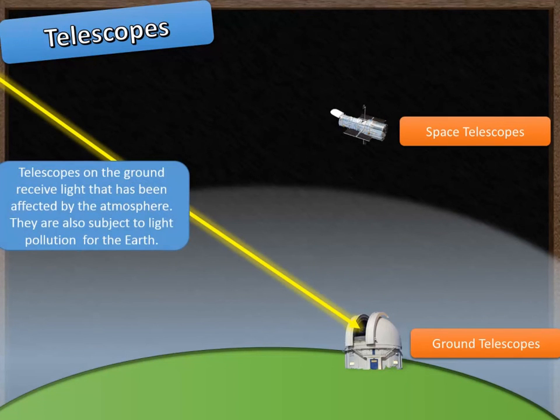When telescopes on the ground receive light, it's been affected by the atmosphere. As the light passes through the atmosphere it gets refracted—that means it gets deflected slightly and changes direction. That means that the telescope isn't seeing the light as it was originally emitted by the star.